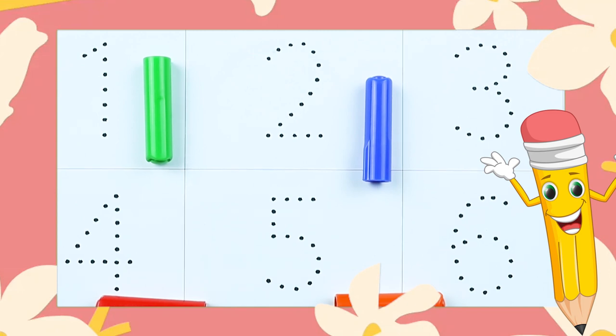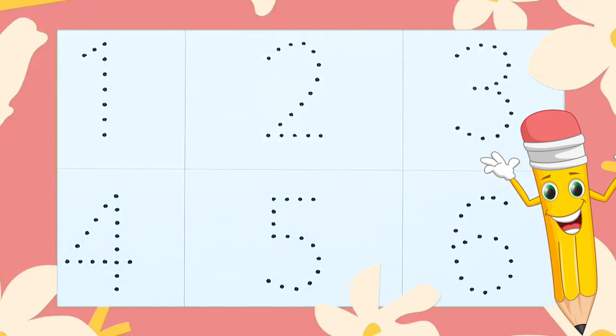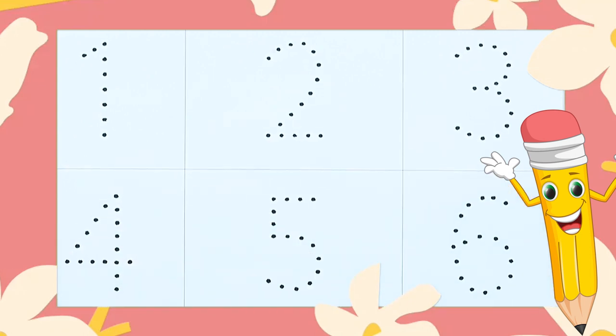Hello friends, today we learn numbers 1 to 10 with some colors: red color, blue color, green color, orange color. Let's start.